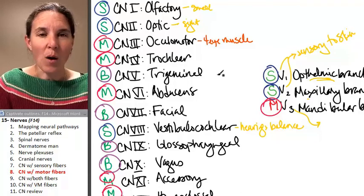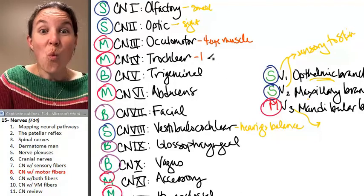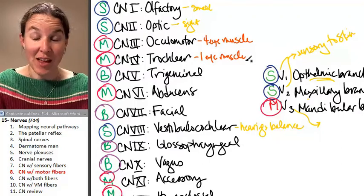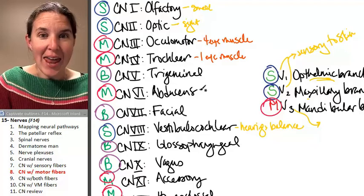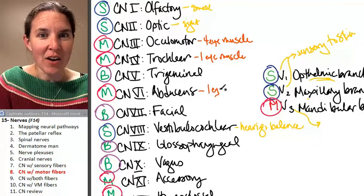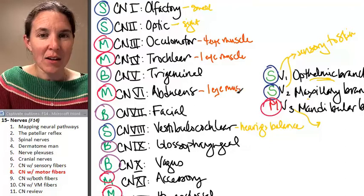Trochlear, all motor, does one eye muscle. And you're going to learn the eye muscle and what it does. And abducens, one eye muscle. Did we take care of all of our eye muscles? Yeah.